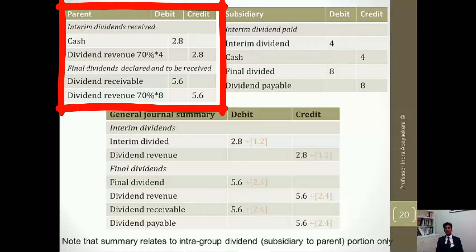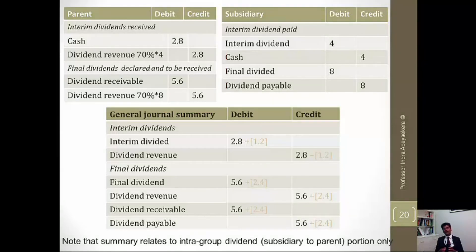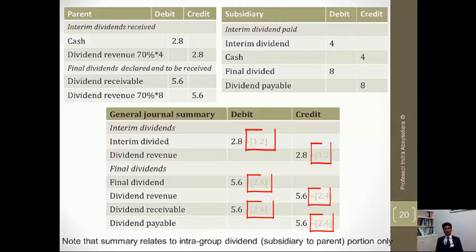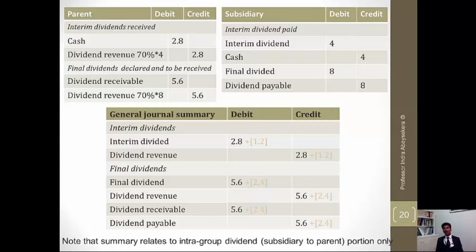The parent credits dividend revenue and debits dividend receivable of $5.6 million. What we need to eliminate is what the parent has received. The other dividend — that is 30% of dividends — is declared and paid to non-controlling interest shareholders. Although they are part of the group, they are not part of the intergroup transactions. So that portion is disregarded for the moment; we take it into account when we determine the non-controlling interest. But for the intergroup dividends, what we take is the dividend that the parent will receive and has received.